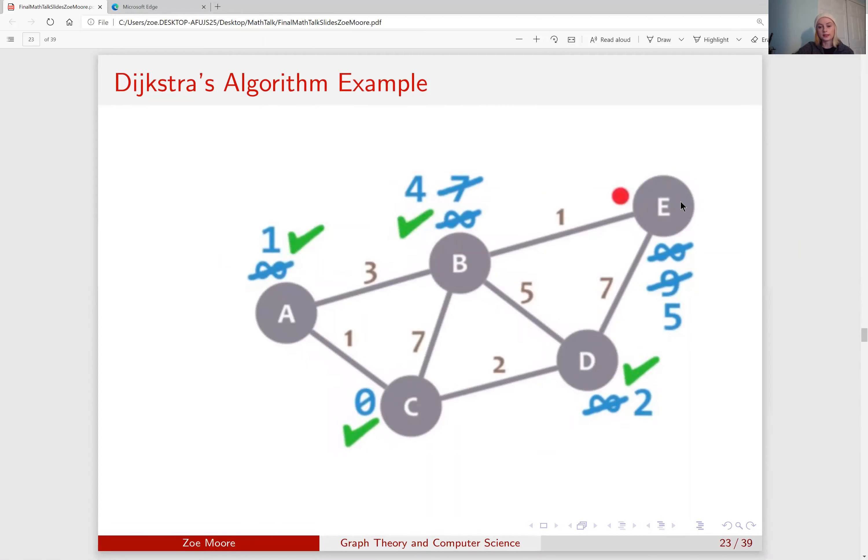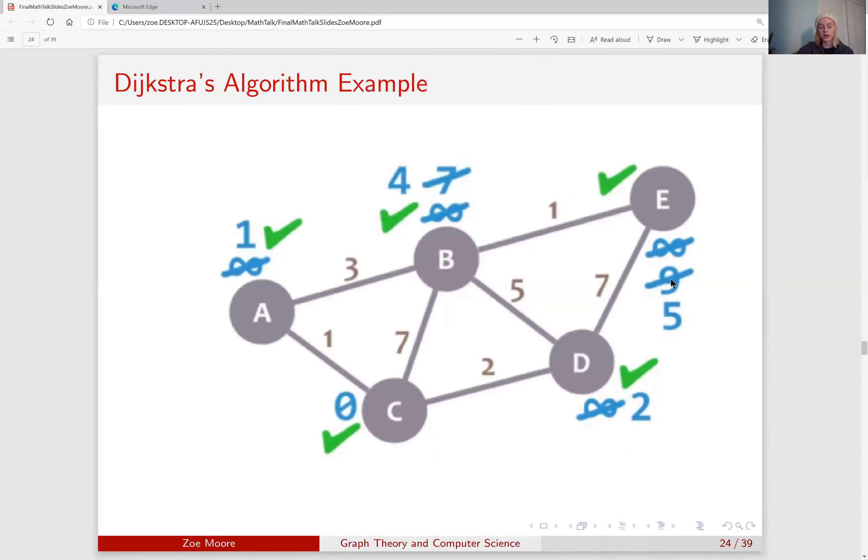Finally, we have to look at E. E is connected to B and D, but those are both completed, meaning that we assign the label that E has, which is 5, and now we're done. This tells us that starting at C, we know the shortest path to any node in the graph, and we know that, for instance, getting from C to E, it would be shorter to go C to A, A to B, and B to E than any other combination of nodes.